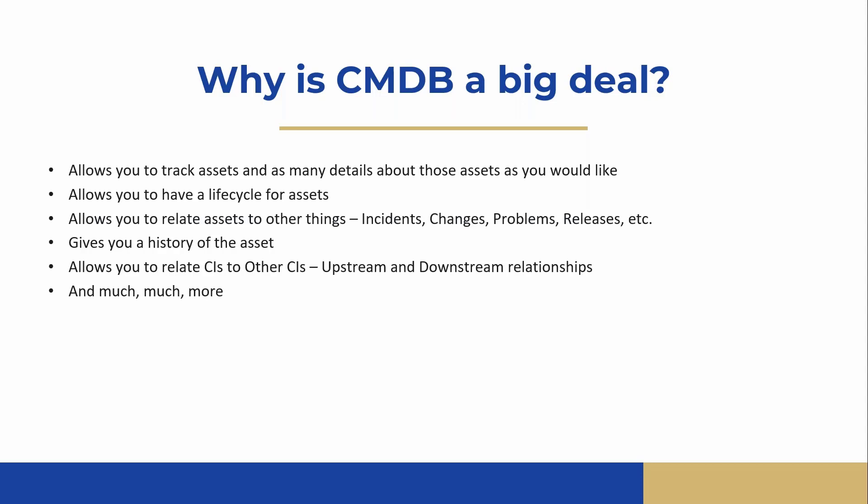We can correlate upstream and downstream relationships to change management, problem management, and more. If you're into event management, an event triggers and gets written to the particular configuration item, telling us that device just went down. We could be setting off alarms — it could be a router or a switch that just went down. Because of our upstream and downstream dependency relationships, we know everything else that might be affected by that particular outage.